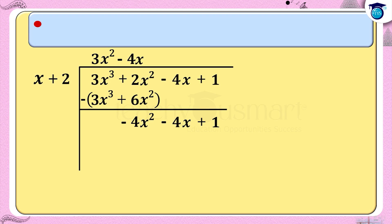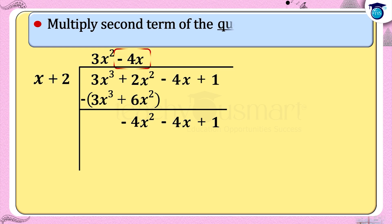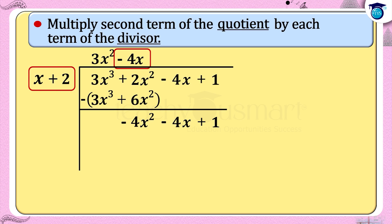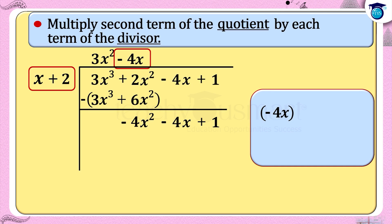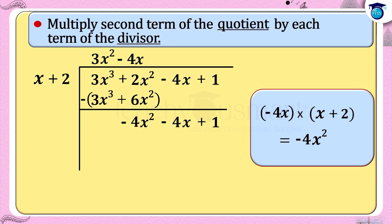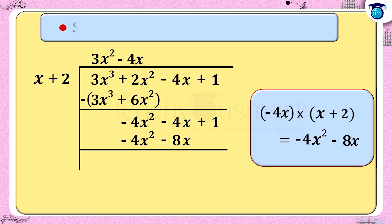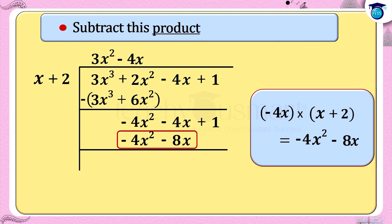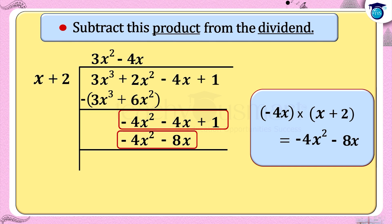Step 6: Multiply the second term of the quotient, -4x, by each term of the divisor x + 2. That is -4x × (x + 2) = -4x² - 8x. Step 7: Subtract this product -4x² - 8x from the dividend -4x² - 4x + 1. We get the remainder as 4x + 1.